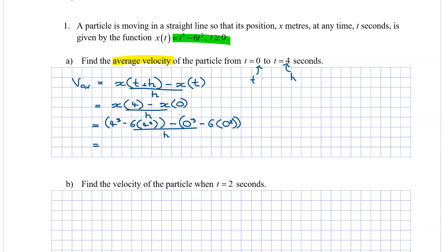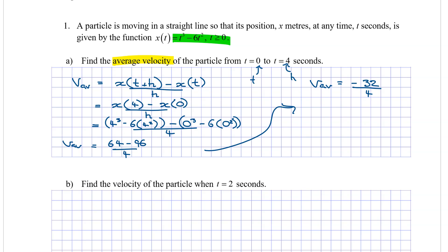So what we're going to get is, with h equal to 4: 4³ equals 64, and 4² is 16, so 16 times 6 is 96. So we have 64 minus 96, all divided by 4. That gives us negative 32 divided by 4, which equals negative 8.